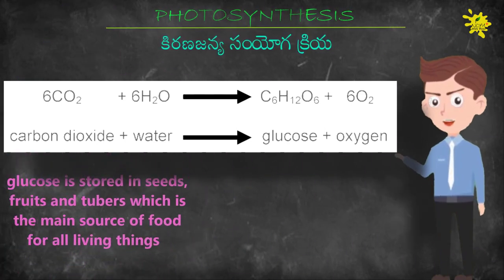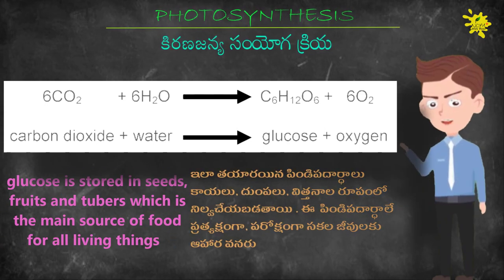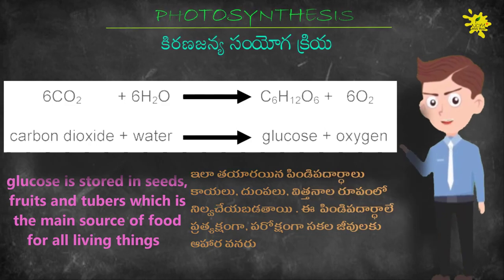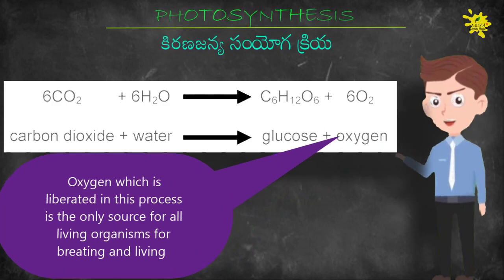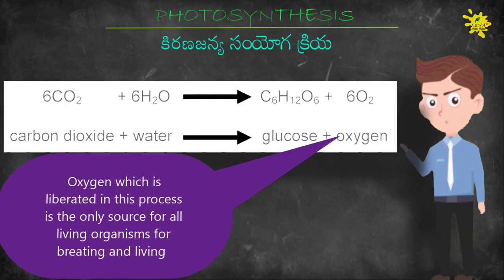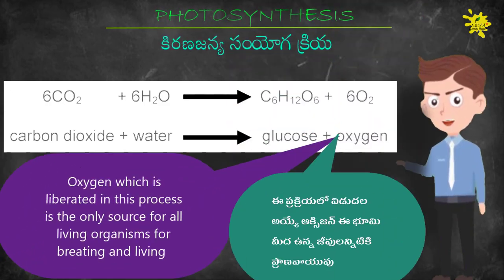Glucose is stored in seeds, fruits, and tubers, which is the main source of food for all living things. Oxygen is liberated in this process and it is the only source for all living organisms for breathing and living.